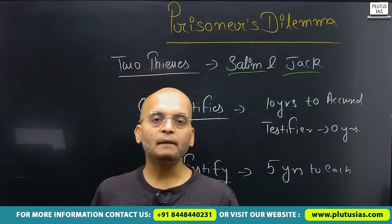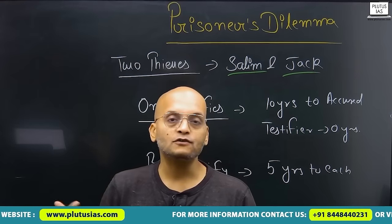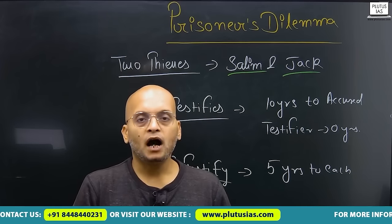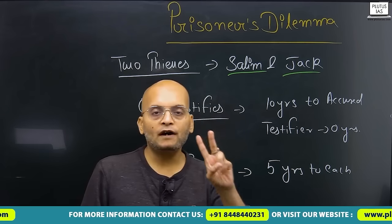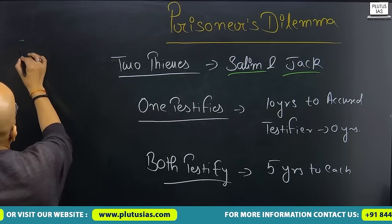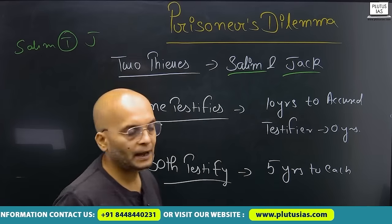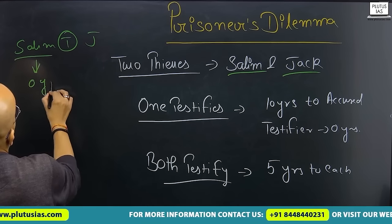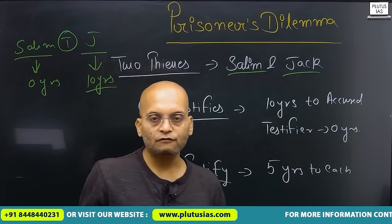Police arrested them but the problem is that police does not have any proof against them. So police interrogates them and tells them about three conditions. If one of the two — either Salim or Jack — testifies against the other, for example if Salim testifies against Jack, then Salim will get zero years in prison and be set free, whereas Jack will spend 10 years in prison.